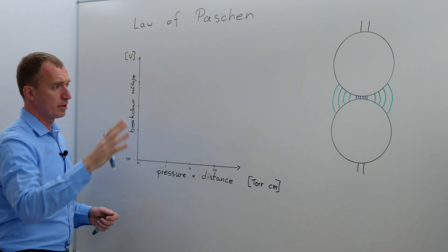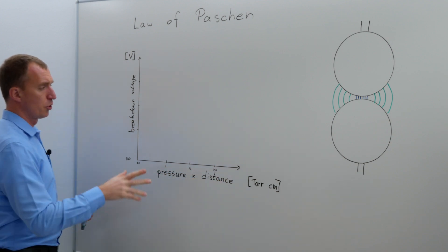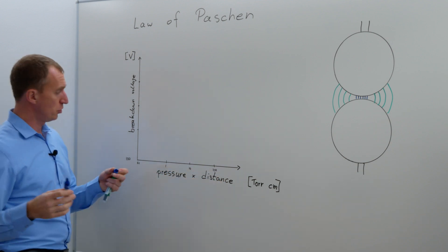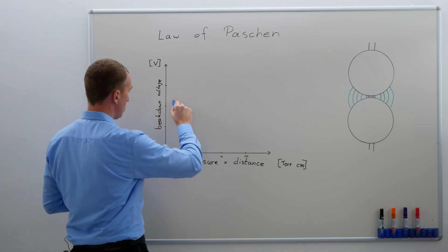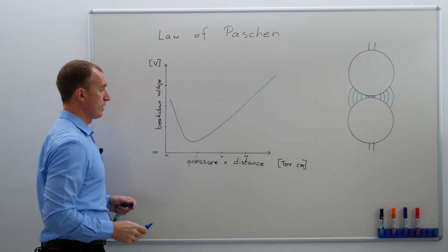However, the old publications from him are pressure times distance in torr and centimeters. Now I'm going to try to draw the Paschen curve, and the Paschen curve would be something like this.